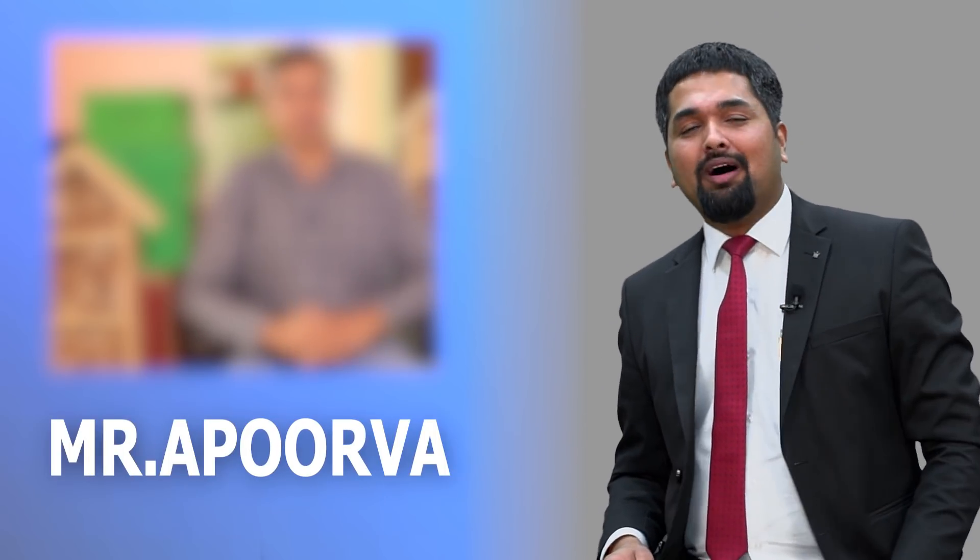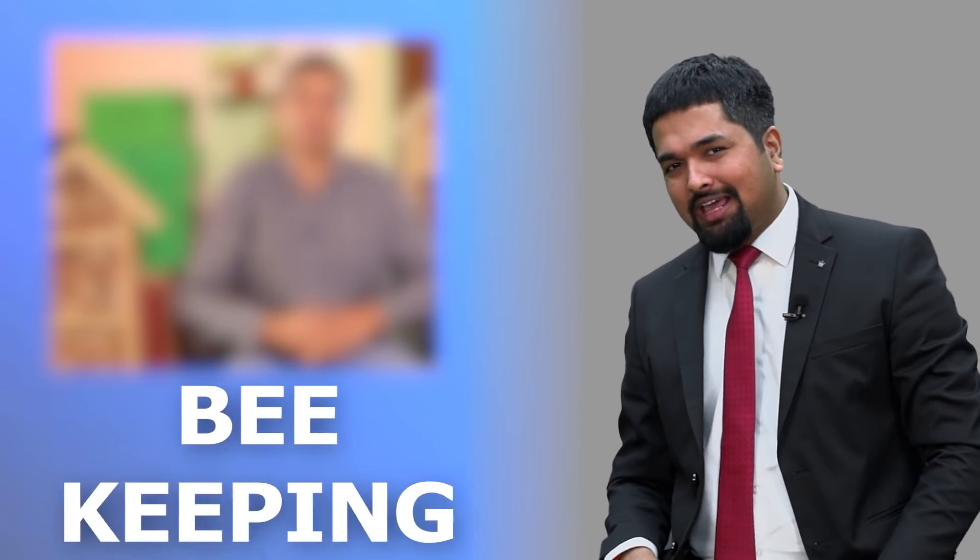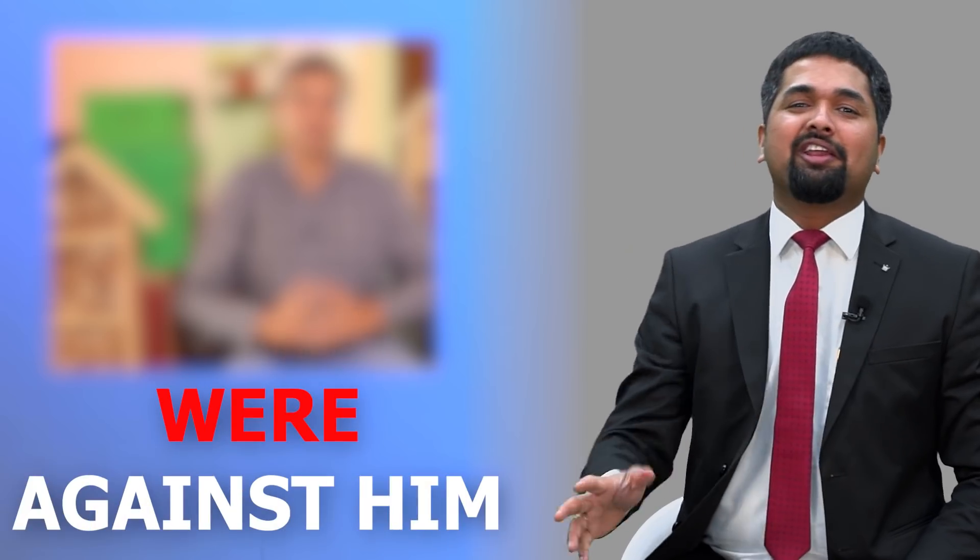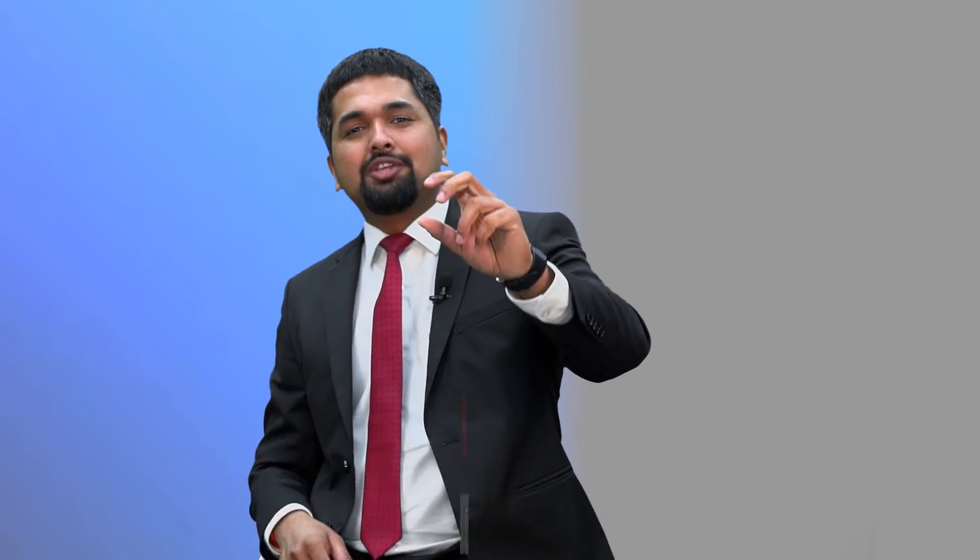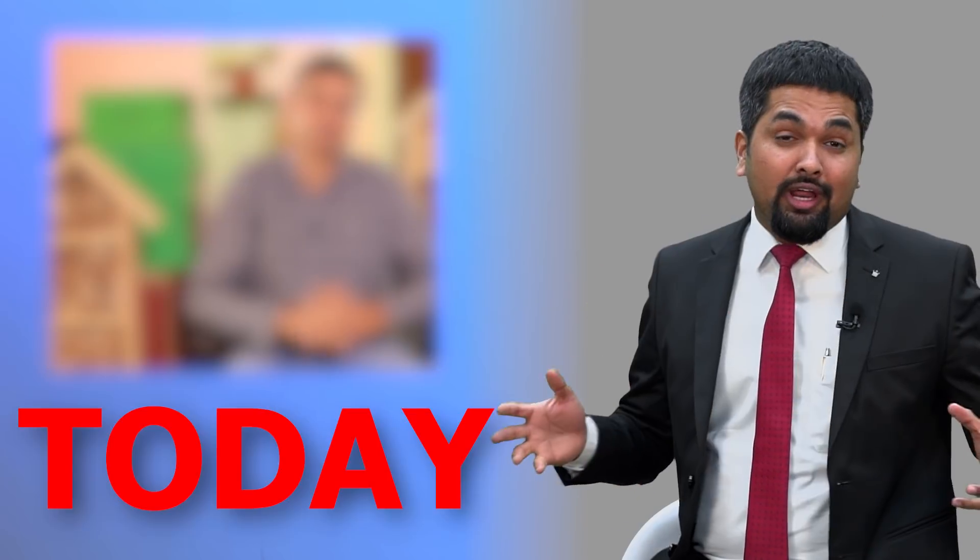And second one, Mr. Apoorwa. Mr. Apoorwa completed engineering. He wanted to start beekeeping and his parents were against him. That's when he borrowed a small sum of money from a bank and started beekeeping. Today, he makes over 2.5 crore rupees just from beekeeping.